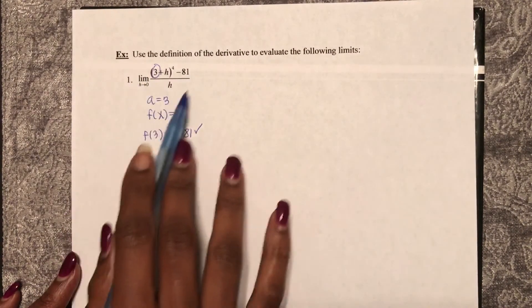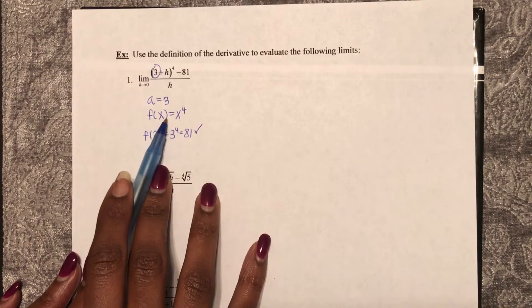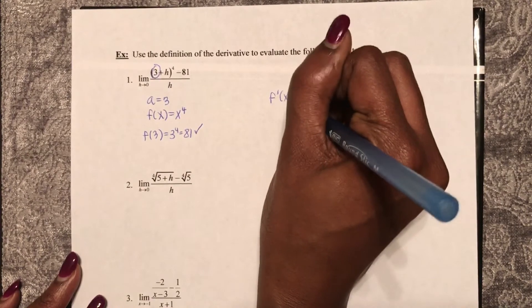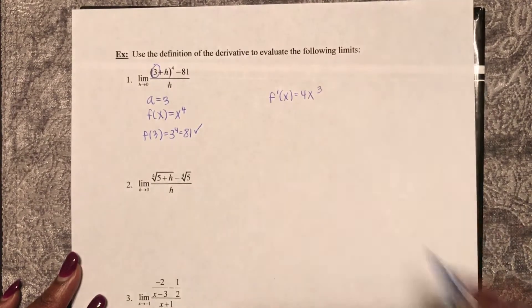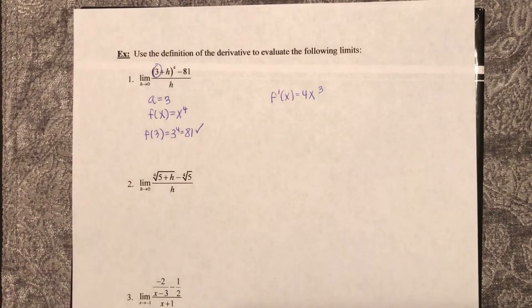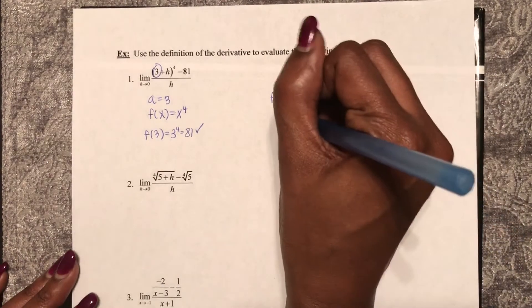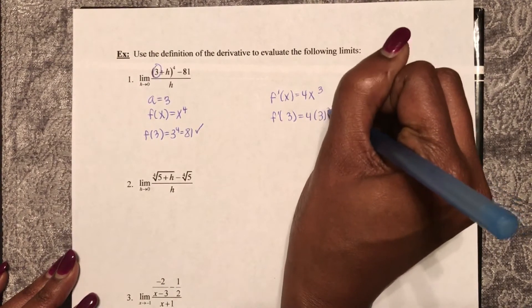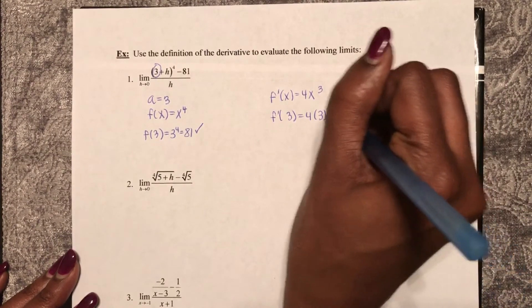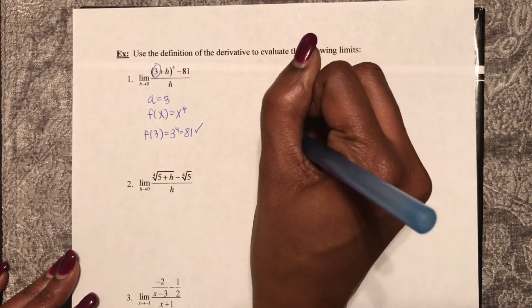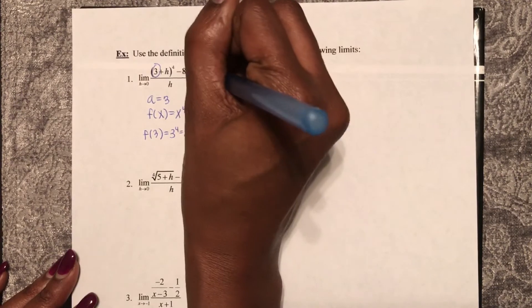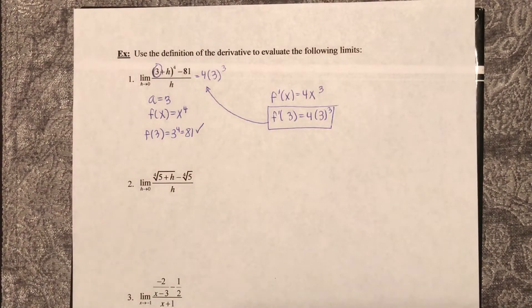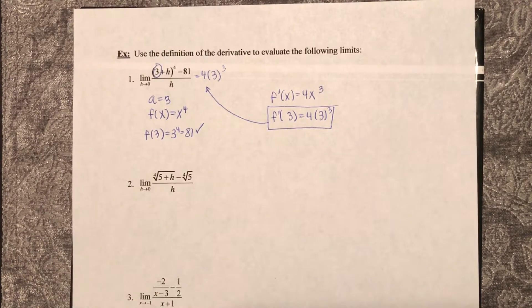So this is really telling me to find the derivative of this function at this value. So f prime of x equals 4x cubed using the power rule. And so f prime of 3 equals 4 times 3 cubed. So we evaluated this as a derivative instead of a limit.